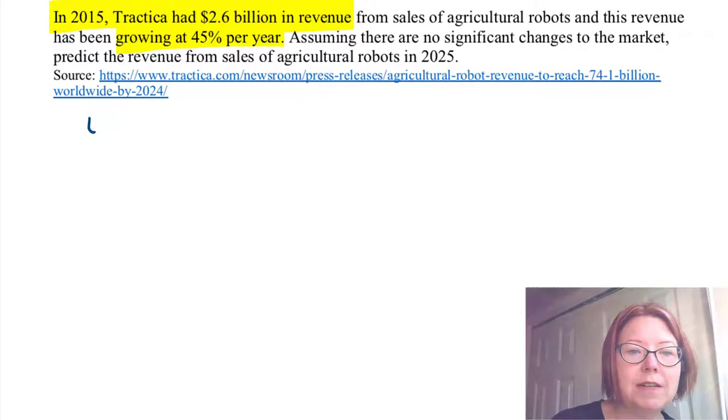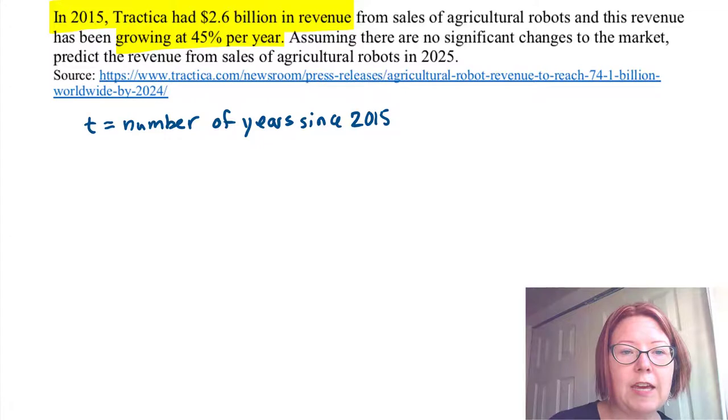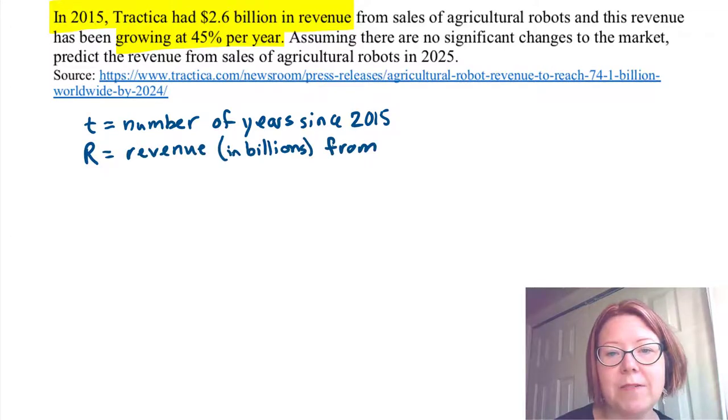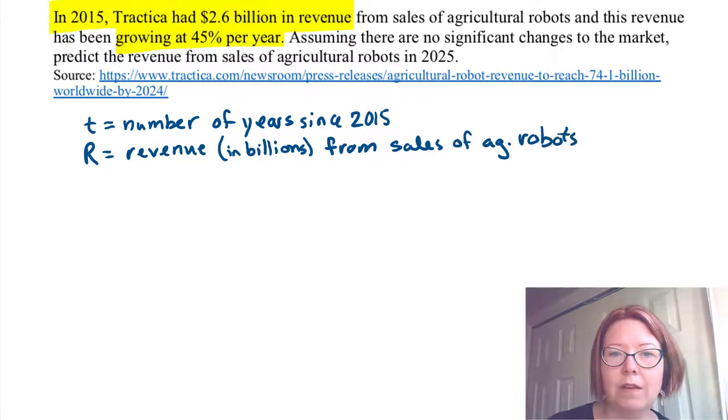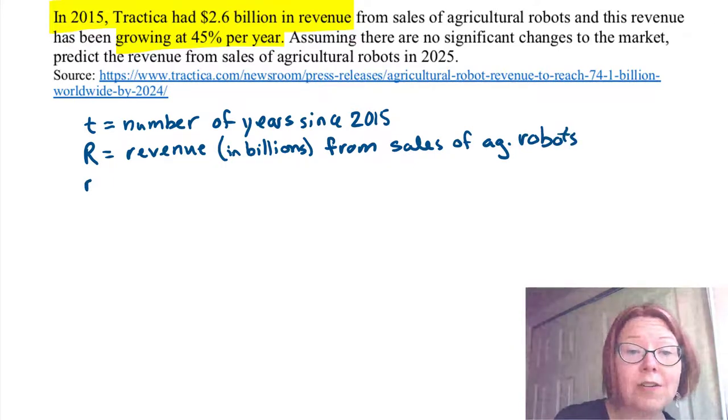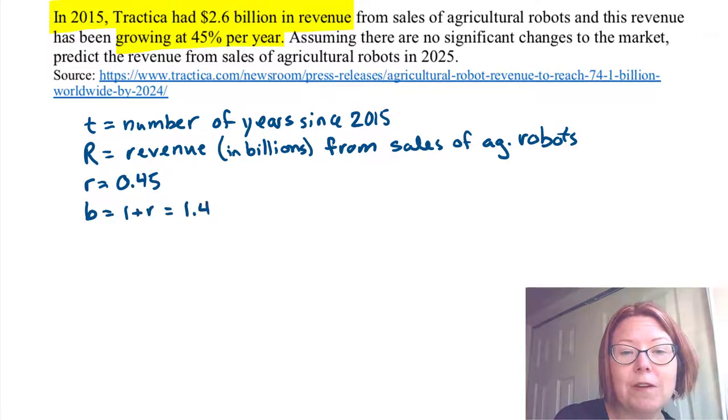So let's let t be the number of years since 2015. And let's let capital R be the revenue in billions from sales of agricultural robots. We also know that the r value, the lowercase r value, is 0.45. So the growth factor b would be 1 plus r, which is 1.45.